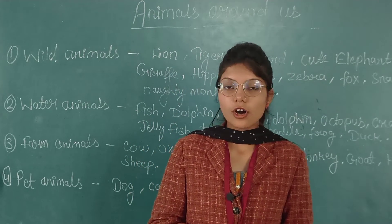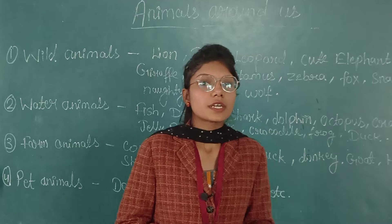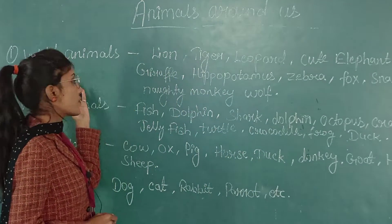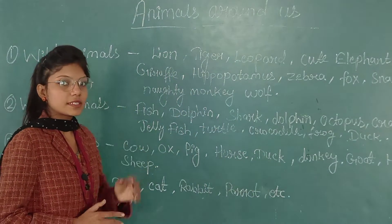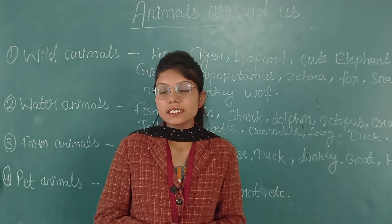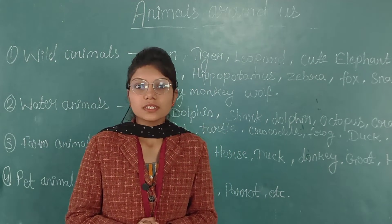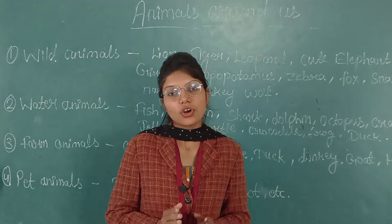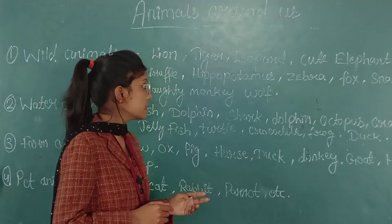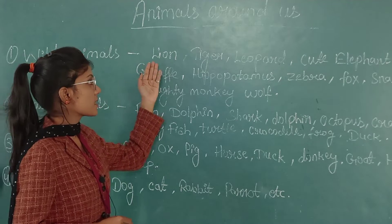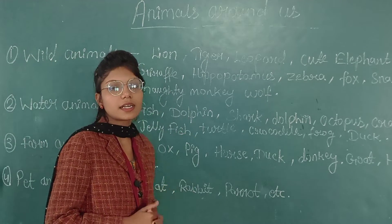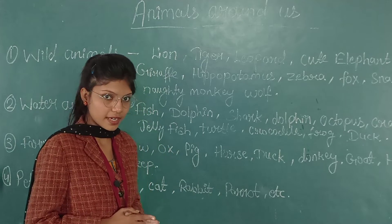First of all, we are discussing about wild animals. Wild animals are those animals which live in forest or jungle. For example, the first one is lion, the king of the jungle.